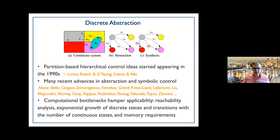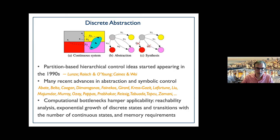There are severe computational bottlenecks limiting applicability of symbolic control. First, it relies on repeated reachability computations from each bin, which don't scale well. Even if that were manageable, there is exponential growth of discrete states as the dimension of the continuous state space increases, along with an explosion in the transitions between discrete states and associated memory requirements.